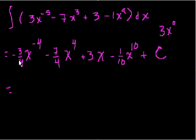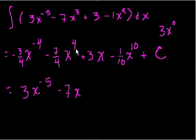So let's take the derivative of this. Minus 4 times this coefficient. Minus 4 times minus 3 fourths is 3x. Then we subtract 1 from this exponent. Minus 5. And then, minus 7 fourths times 4 is minus 7x to the, we take 1 from this exponent, x to the third.